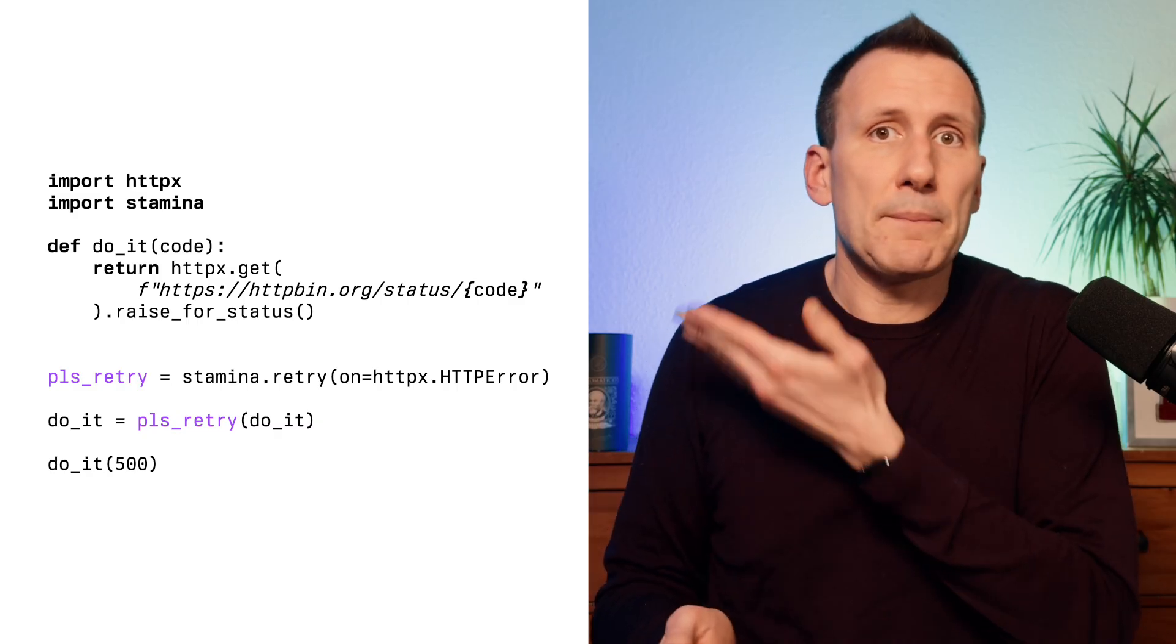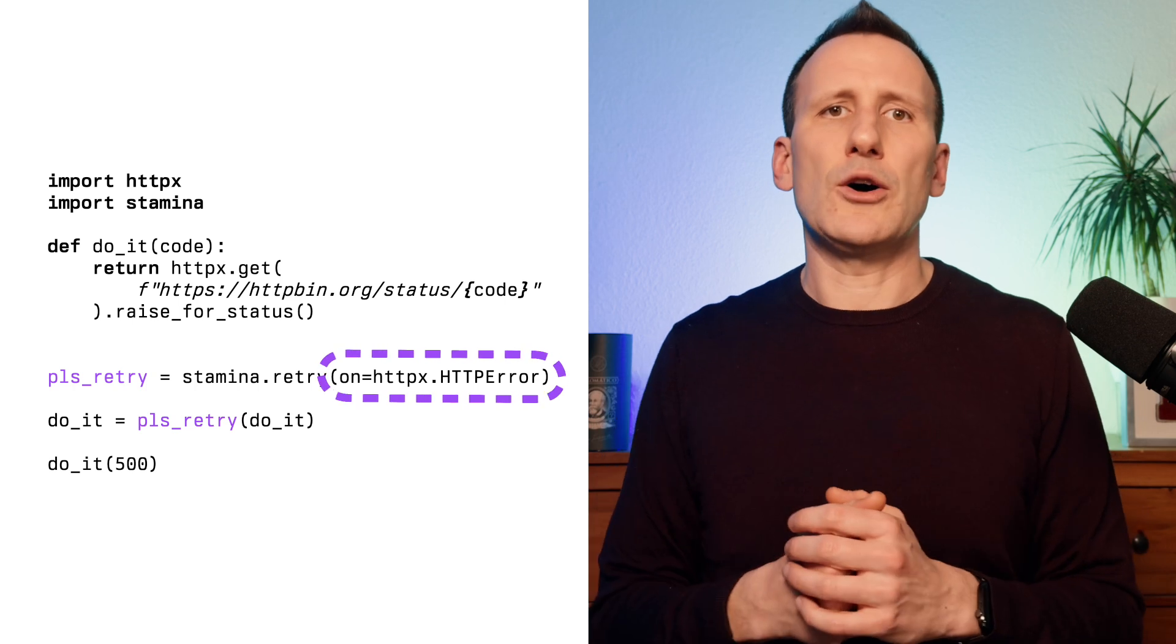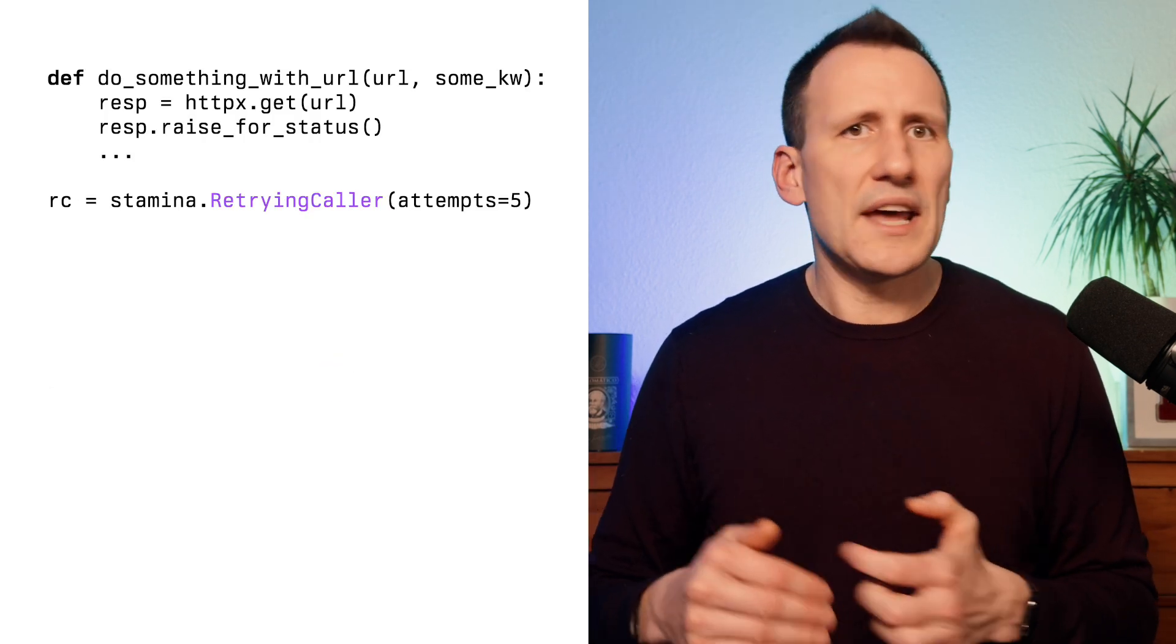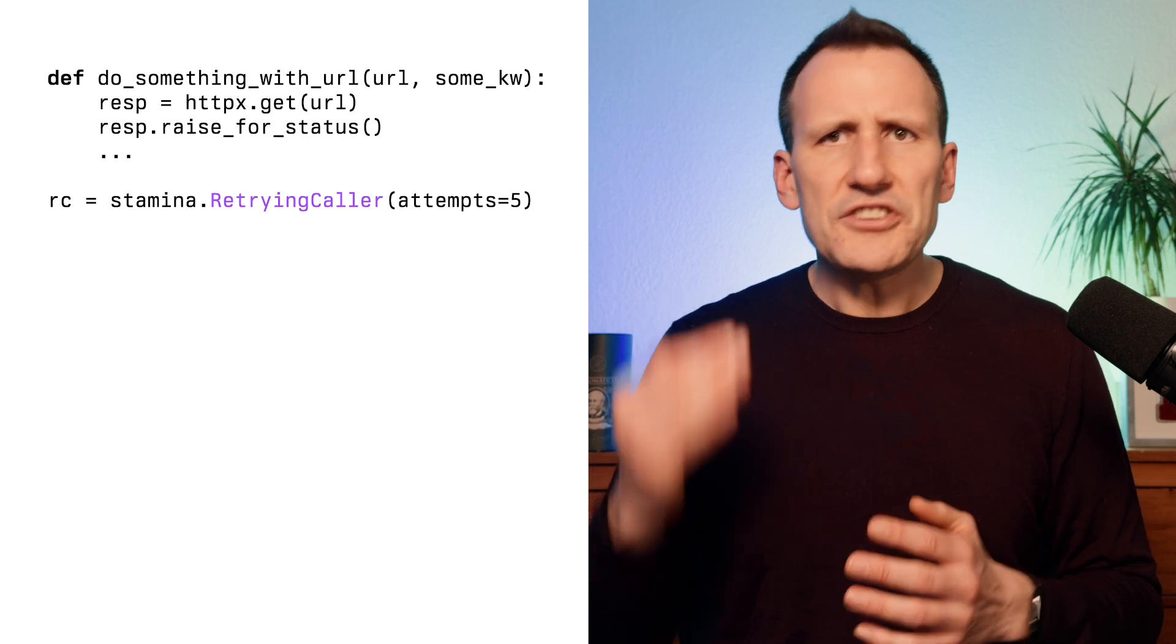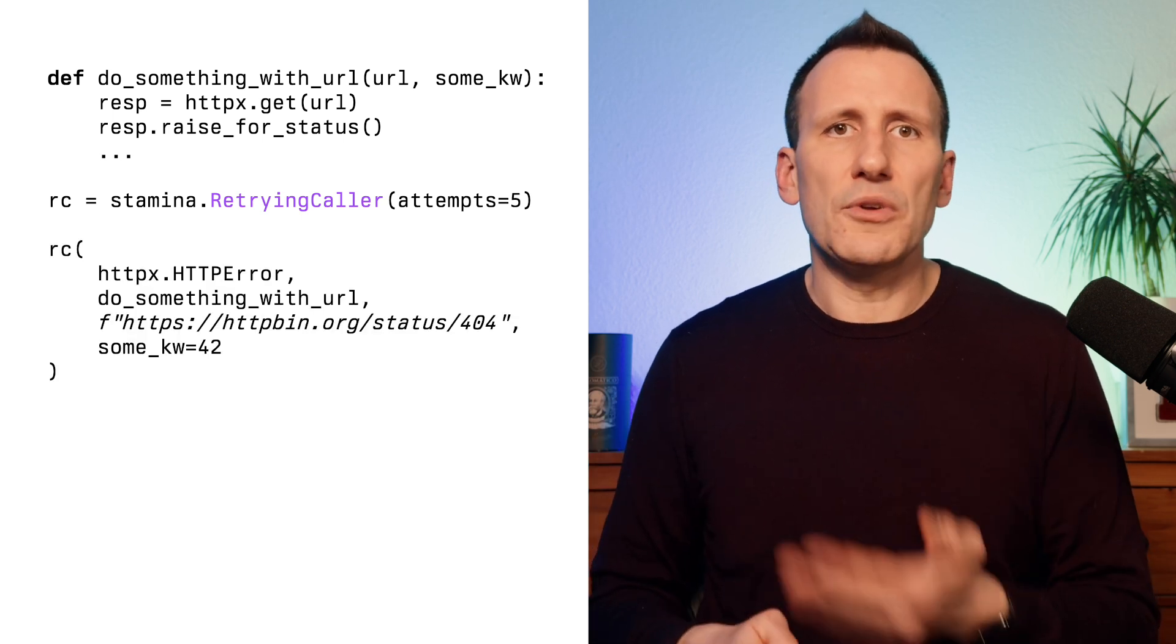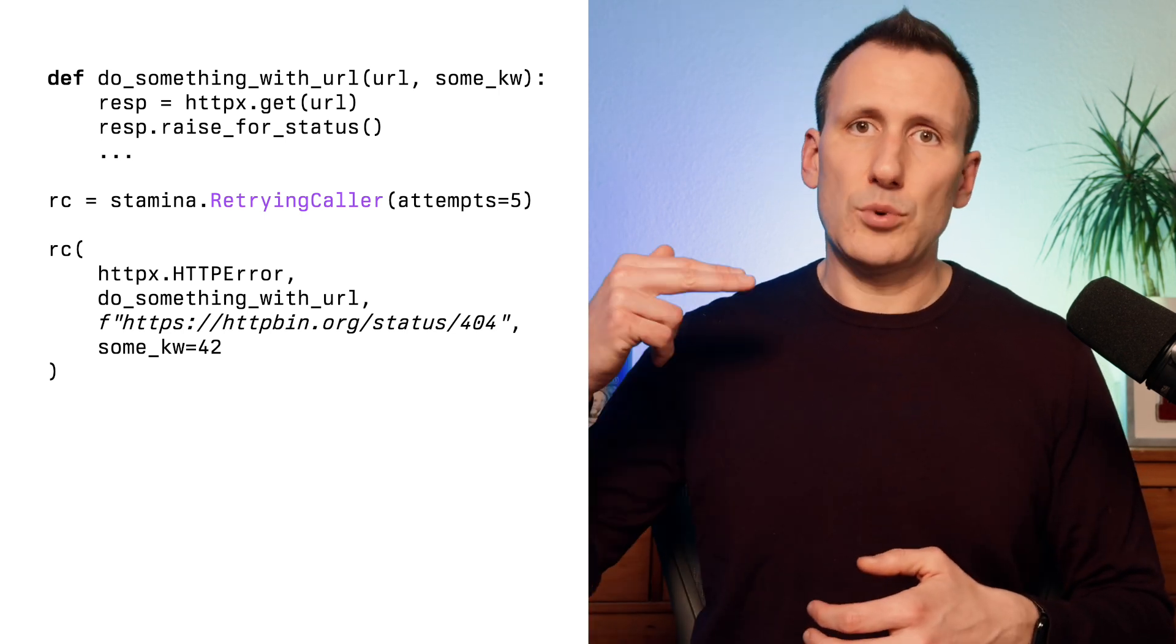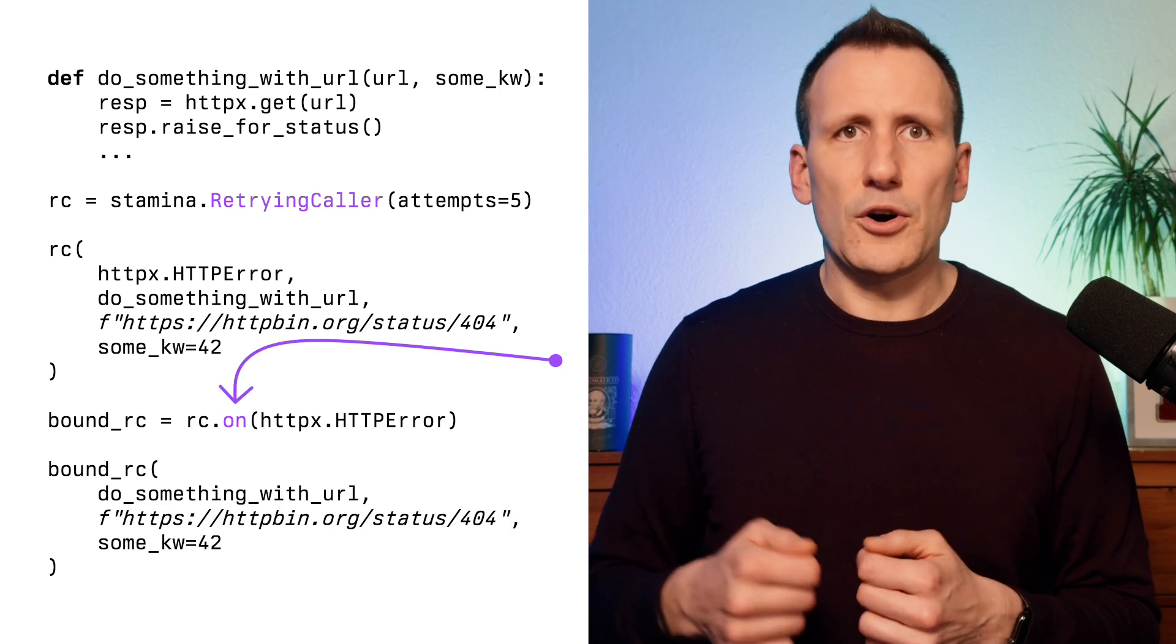Sometimes you do want to retry a whole function but you just can't slap a decorator on it because maybe it's coming from a different packet that you don't control or maybe it's a lower level function that has no business in retrying itself. Of course stamina.retry is just a regular decorator so you could pre-create it and apply it on the fly. But that's a bit ugly and forces you to bake in the exception type along with the retry parameters into one retry object. So stamina comes with a retrying caller and an async retrying caller that you instantiate with the retry parameters you want except for the exception it's supposed to retry on. And then you can call any callable function or method with it. Taking the error as the first positional argument. Now if you really want to pre-bind the error type to a retry too you can do that using the on method on the retrying caller objects.